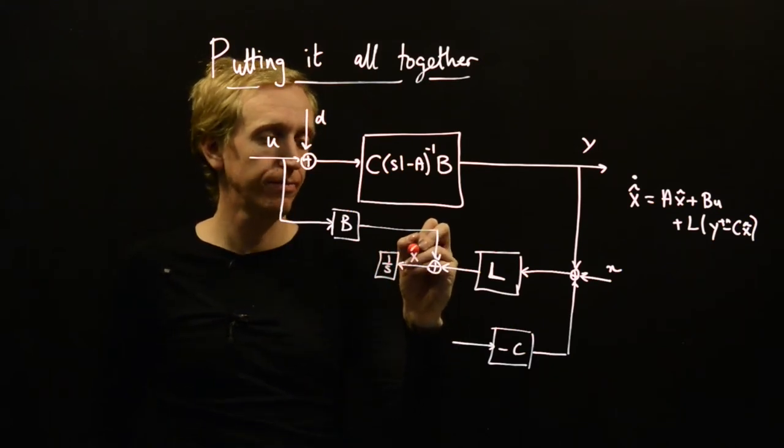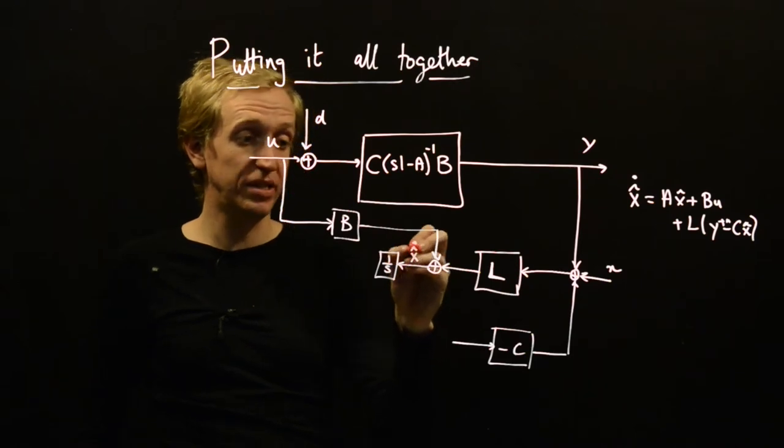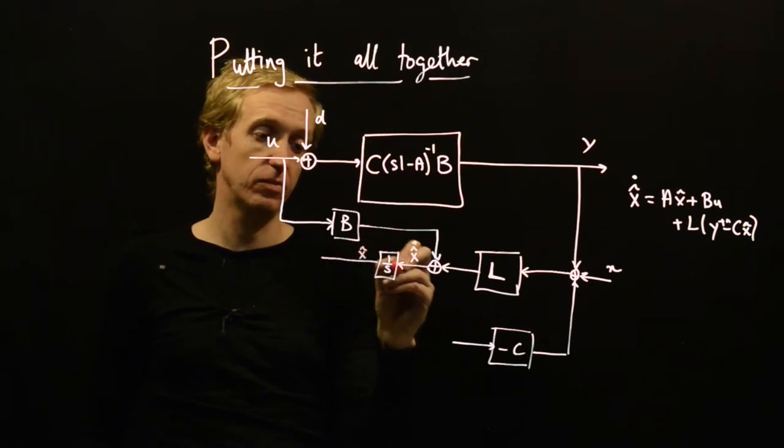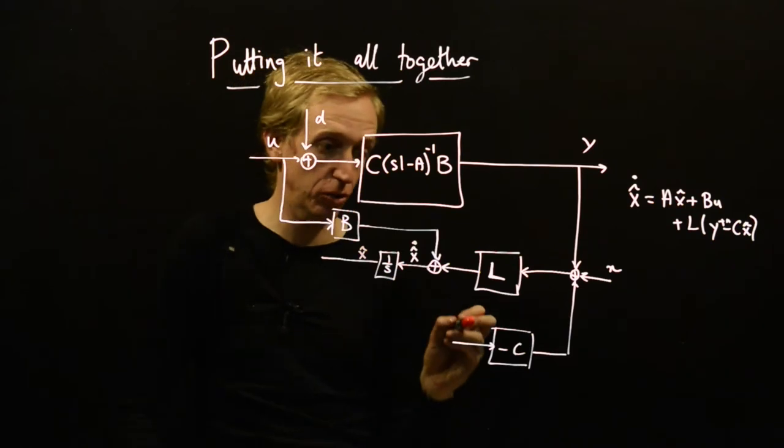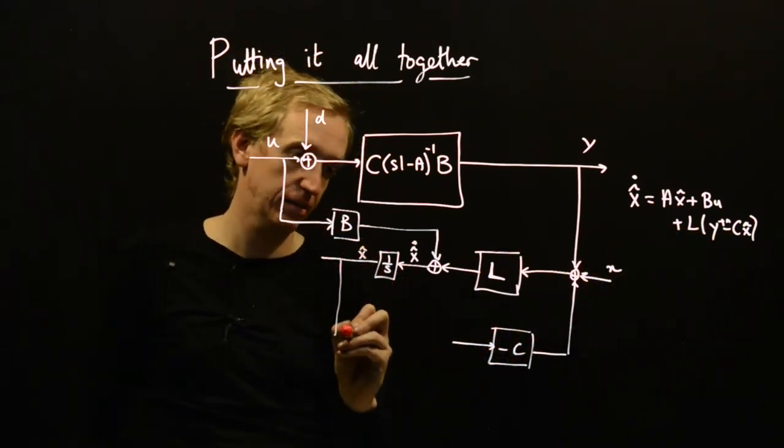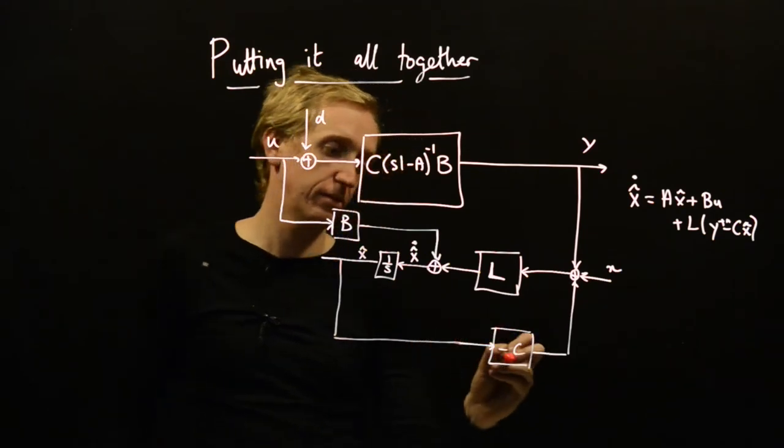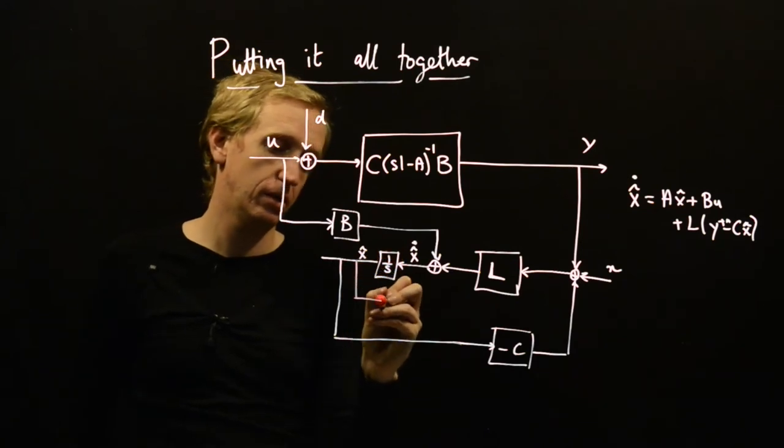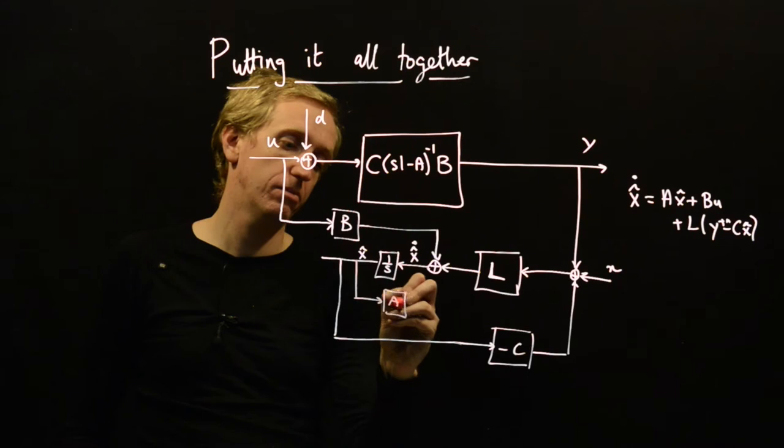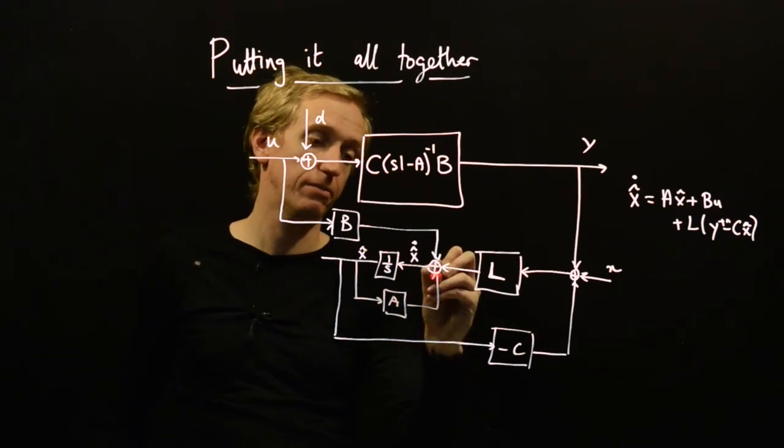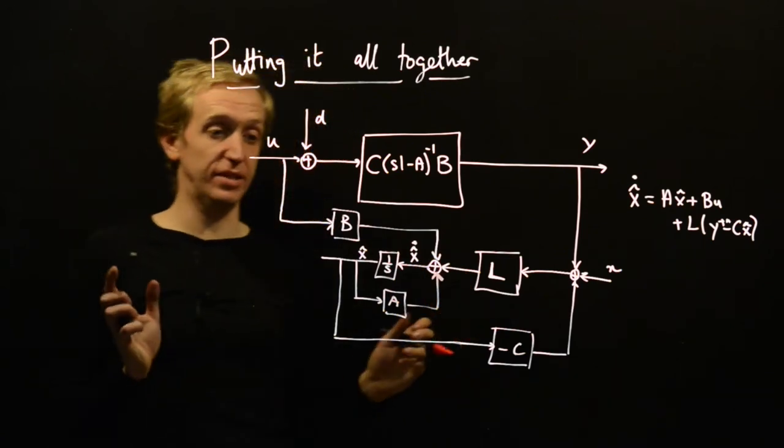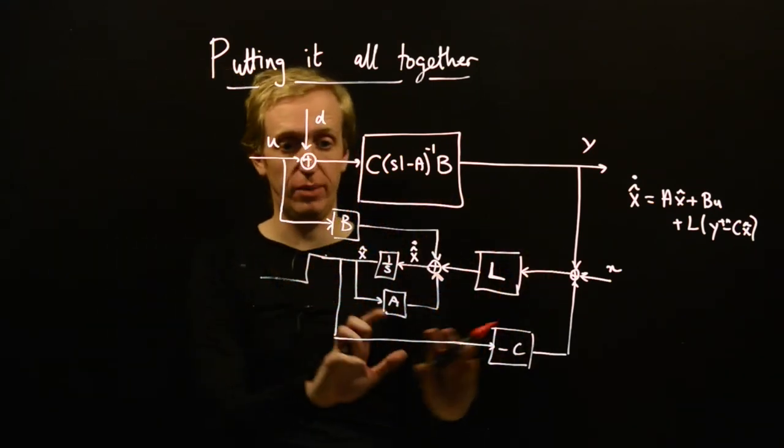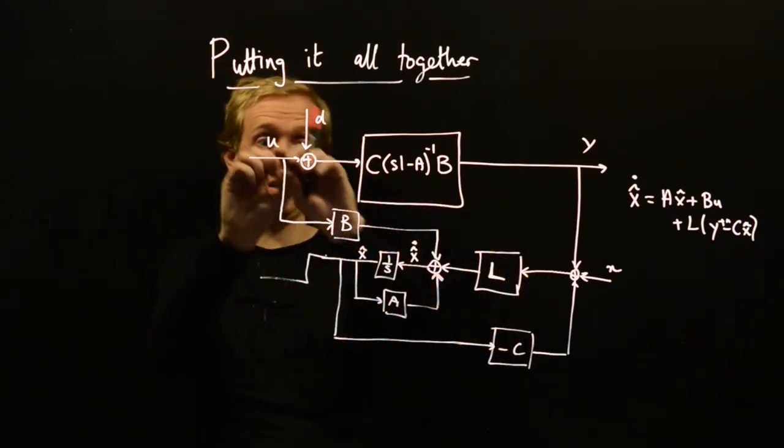We're going to call this X hat dot. So this is X hat dot. That means that this is X hat, we just integrate. That's good because we needed X hat. So we're going to take X hat, feed it through this minus C. And we also need AX hat, so we take this and feed it through A and put it up here. So what we've successfully done is build a block diagram representation of our observer. This is our state observer.